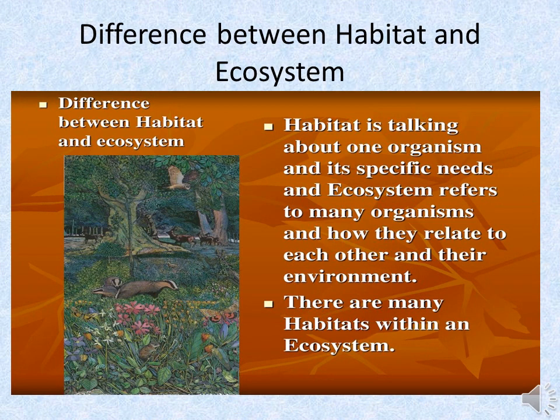Children usually get confused between habitat and ecosystem. Habitat is talking about one organism and its specific needs, whereas ecosystem refers to many organisms staying together and interacting with their environment. There are many habitats within an ecosystem because the ecosystem comprises of many kinds of animals staying together.